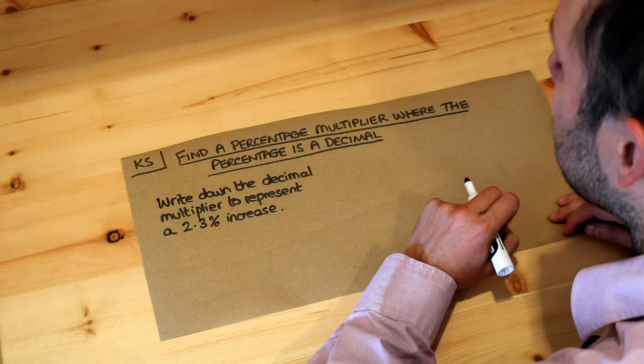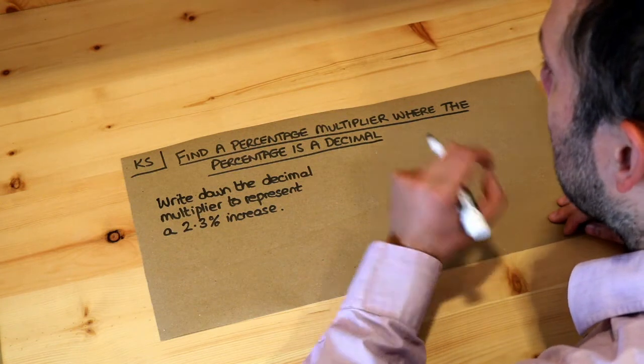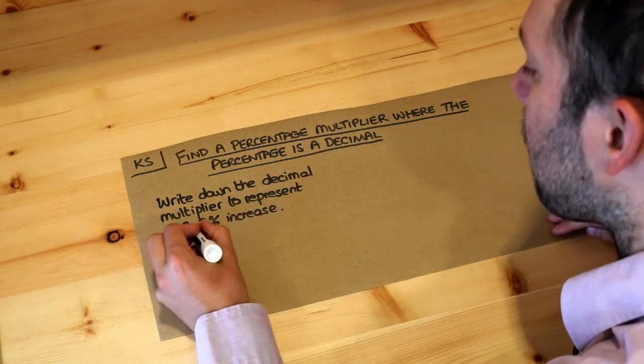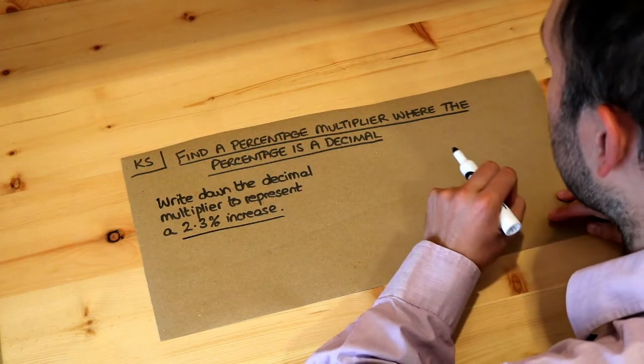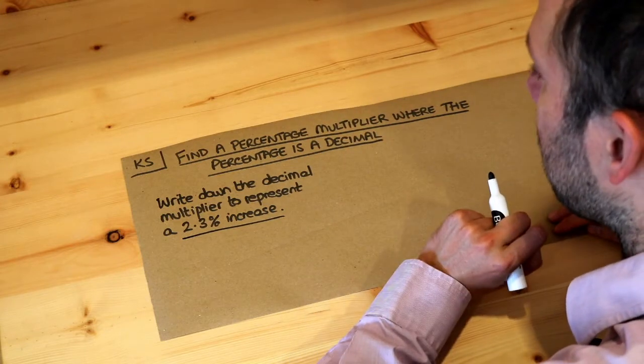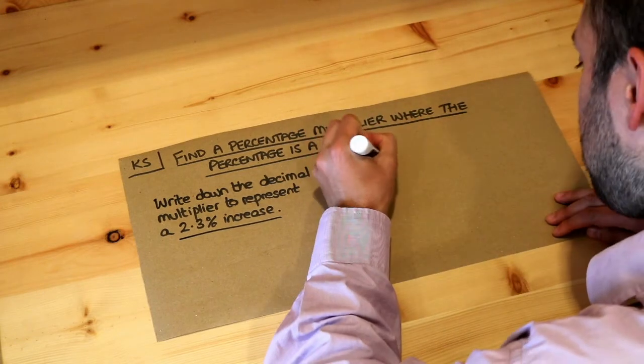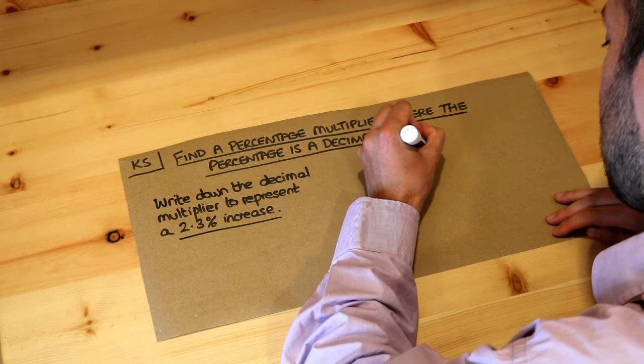We want to find a number that we can multiply by that would have the effect of increasing the number by 2.3%. In the previous video we said that everything starts at 100%, so if we had a 2.3% increase, what percentage of its value is it at now?